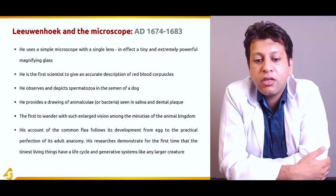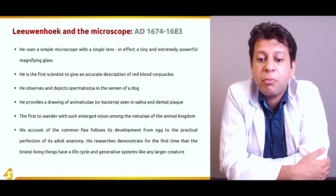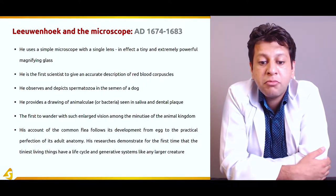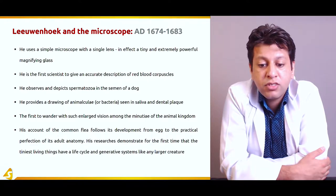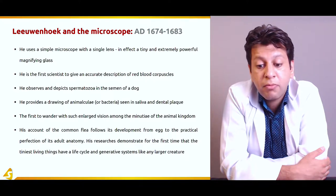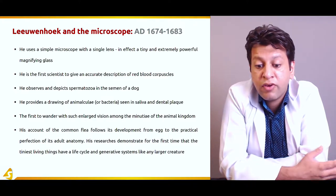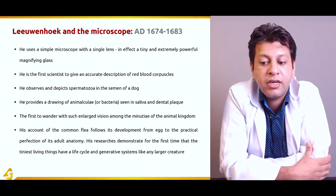Leeuwenhoek used a simple microscope with a single lens — in effect a tiny and extremely powerful magnifying glass. He was the first scientist to give an accurate description of red blood cells. He observed and depicted spermatozoa in the semen of a dog, and provided a drawing of an amoeba, or bacteria, seen in saliva or dental plaque.